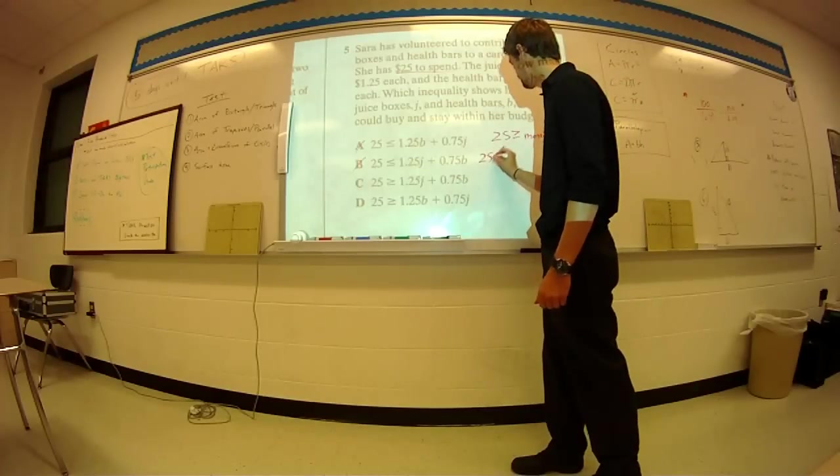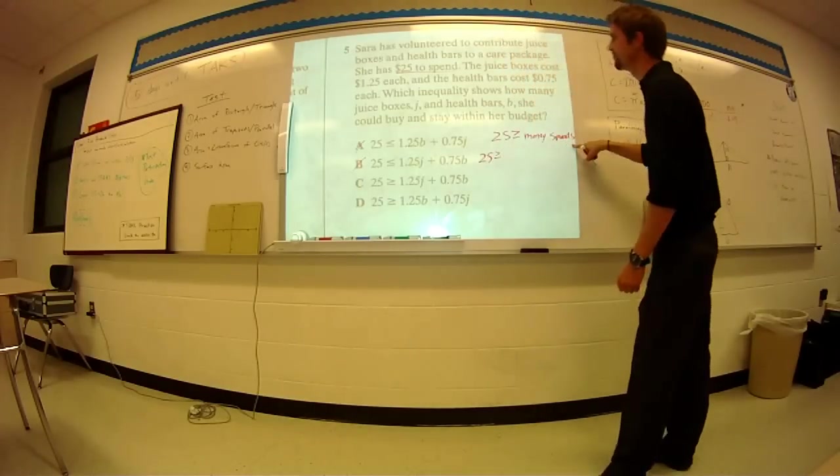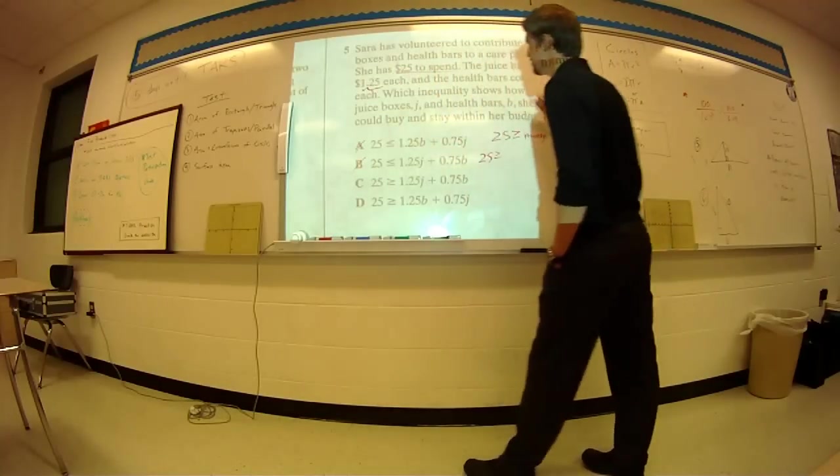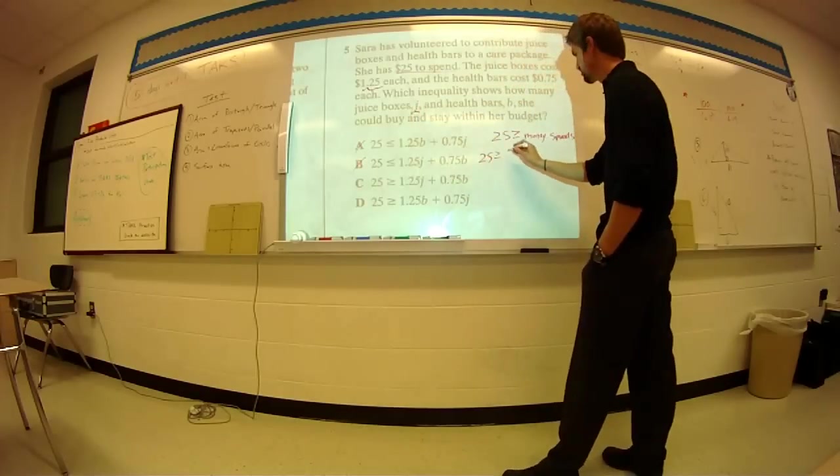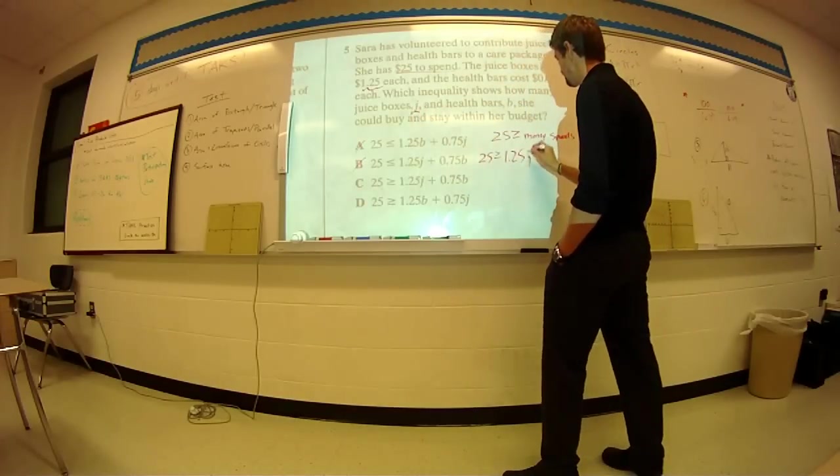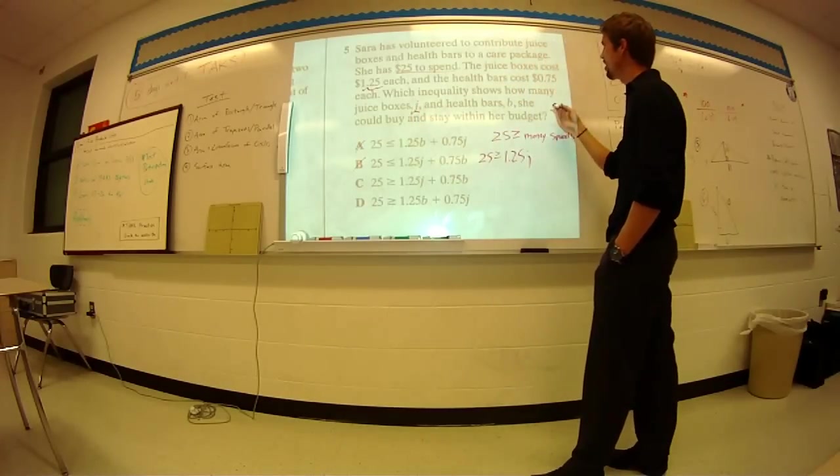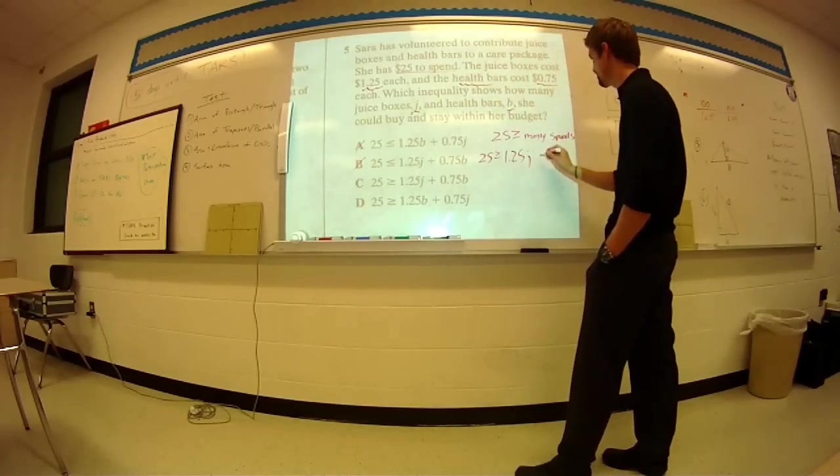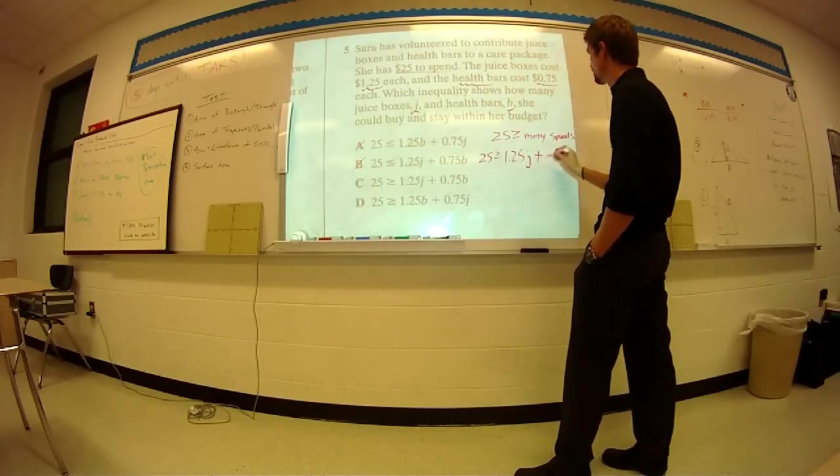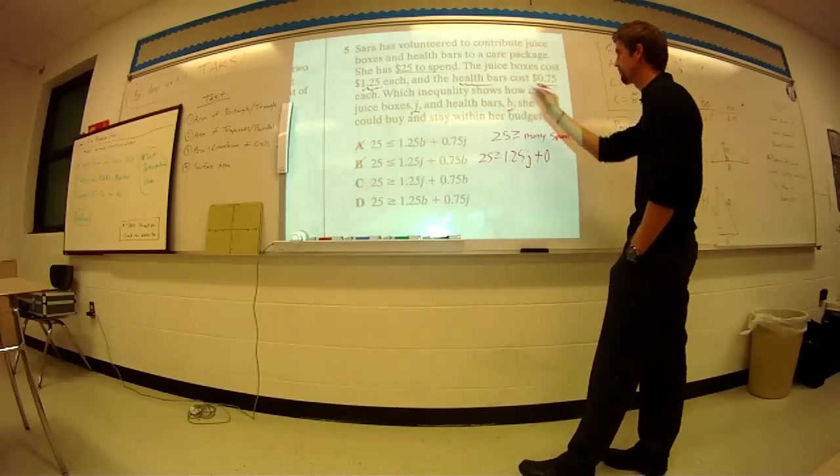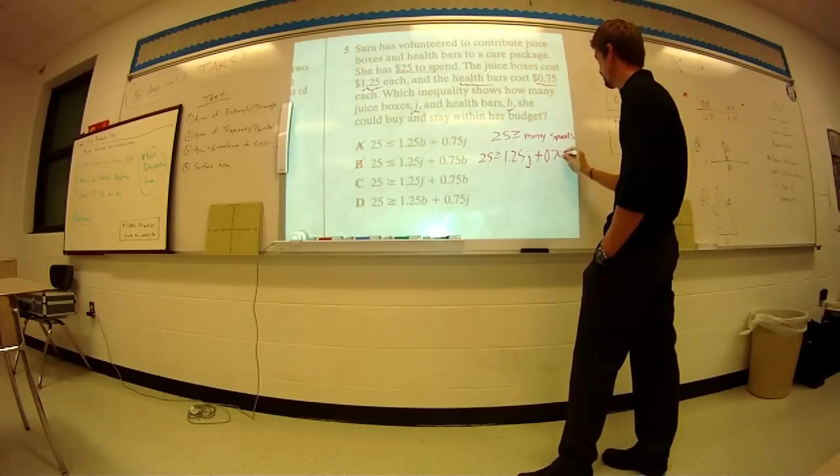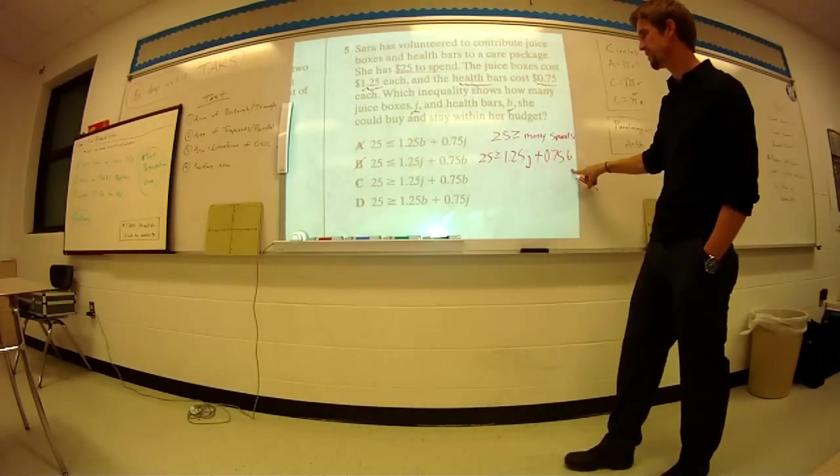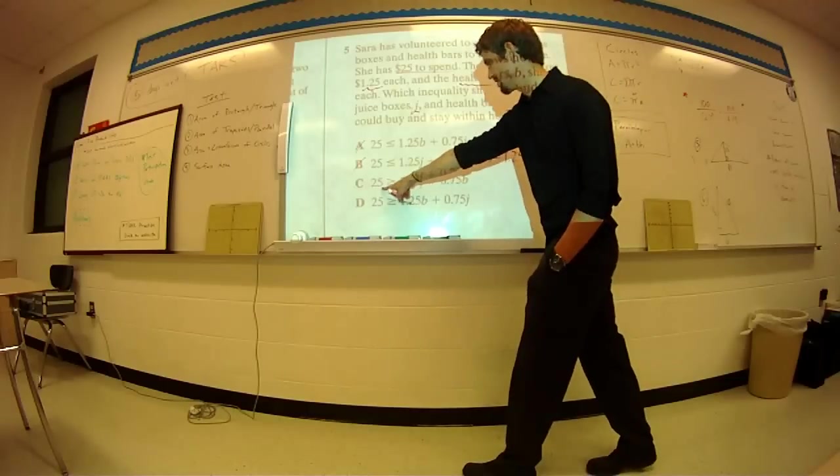So $25 greater than or equal to the money spent. Well, she buys juice boxes for $1.25 each. Juice boxes are J. So she's going to pay $1.25 times every juice box. Also, she gets some health bars. Health bars, $0.75. Health bars are B plus 0.75 health bars B. So $25 is greater than or equal to 1.25J plus 0.75B, which is right here.